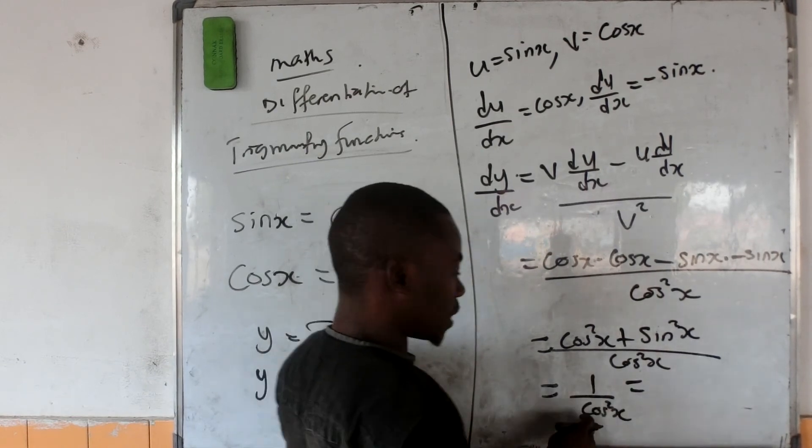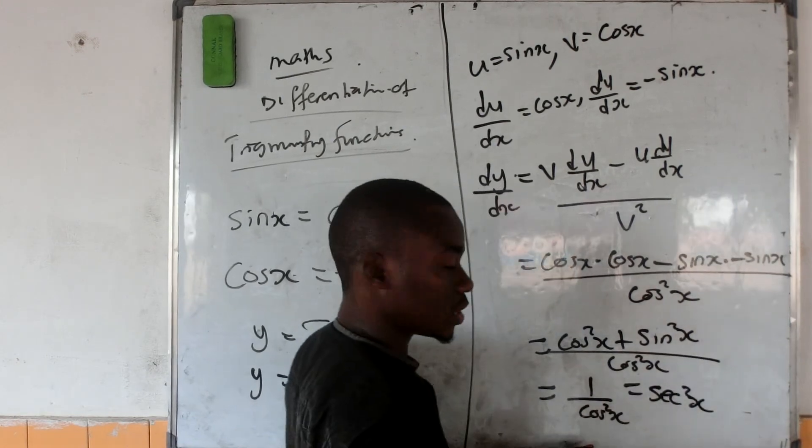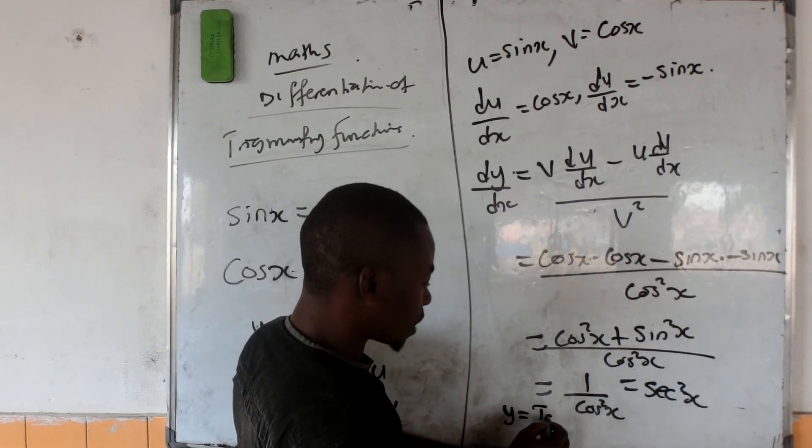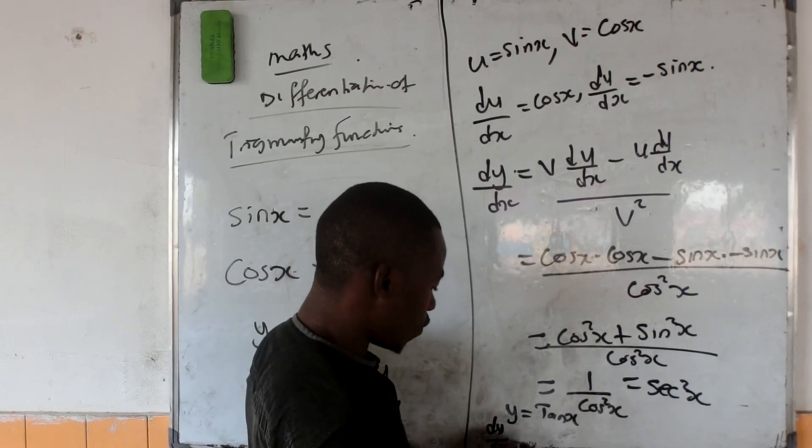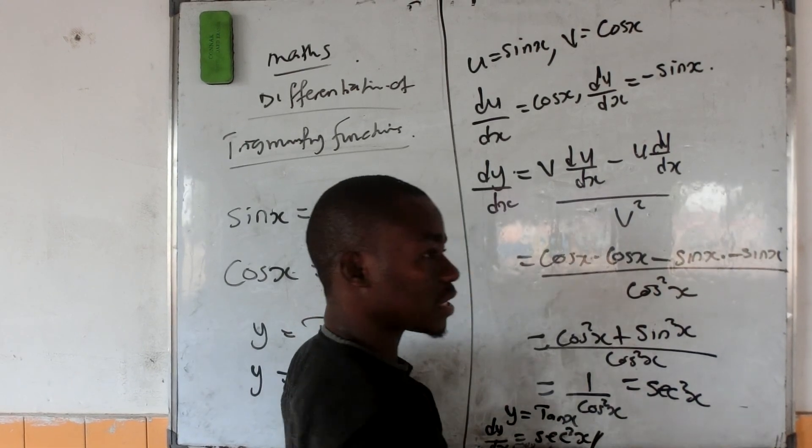Now, 1 over cos squared x will be sec squared x. Therefore, the differential of y equal to tan x is dy/dx equal to sec squared x. Thank you.